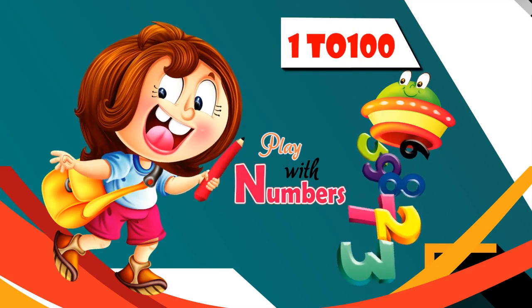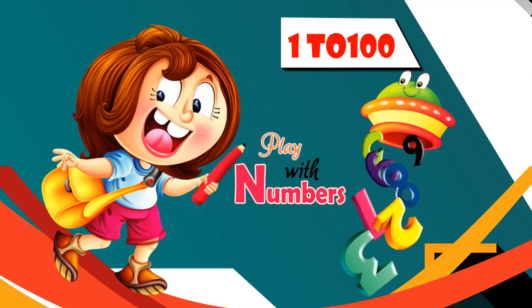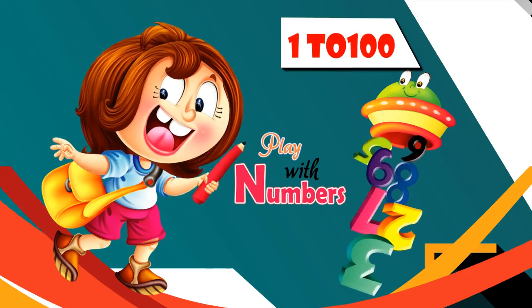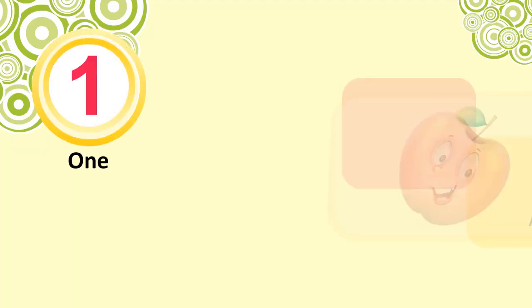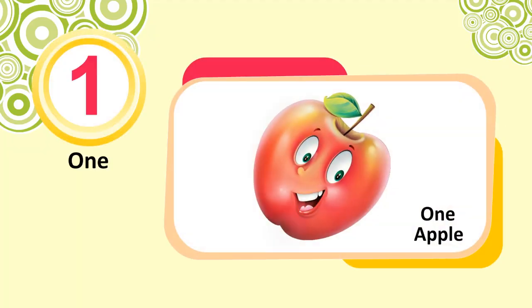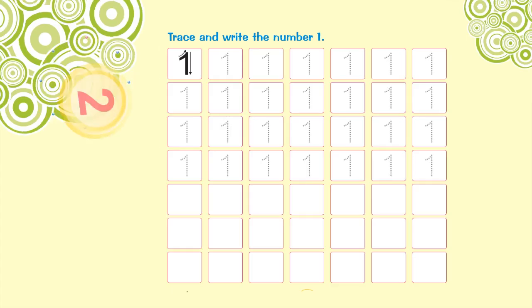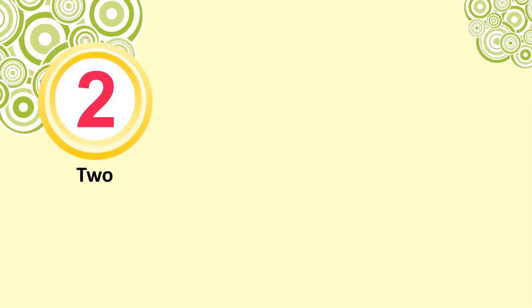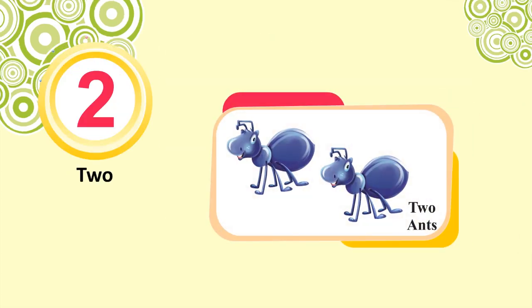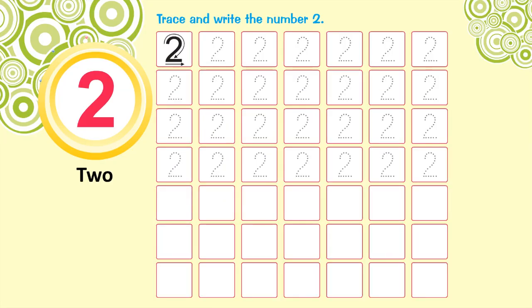Play with numbers 1 to 100. 1. 1 apple. Trace and write the number 1. 2. 2 ants. Trace and write the number 2.